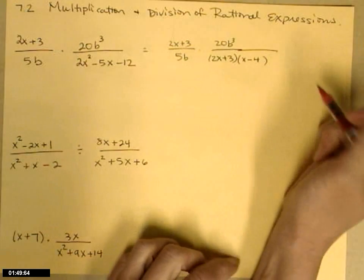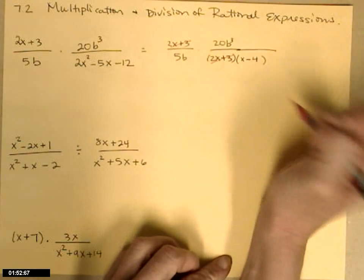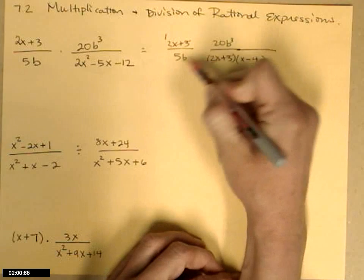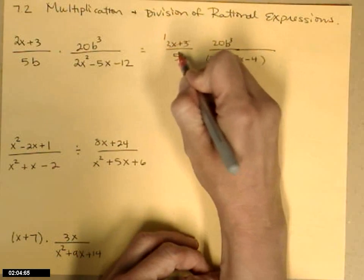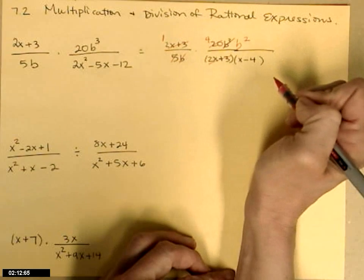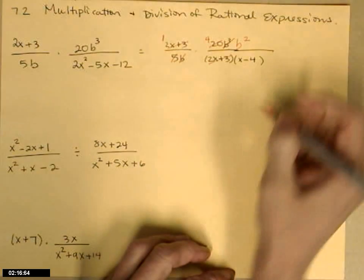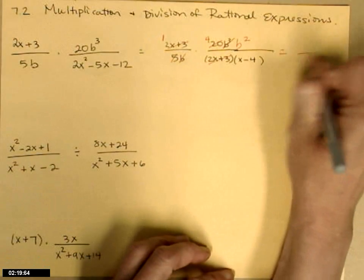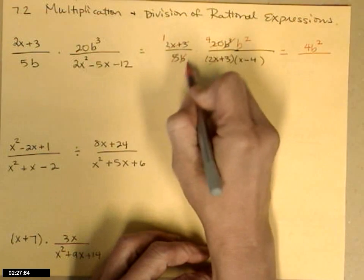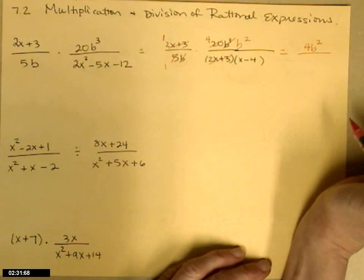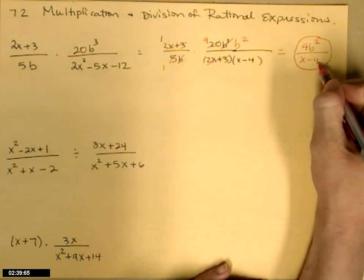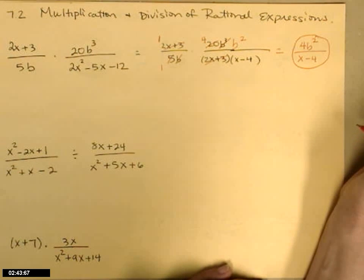Now I have everything factored. I'm going to go through and cancel. The 2x plus 3s are gone — it leaves behind a 1 here, but it has something else to multiply so I'm not going to write it. Then looking across, the 5b and the 20b cubed: 5 goes into 20, leaving behind a 4; b goes into b cubed, leaving behind b squared. So writing everybody that's left behind: 1 times 4 times b squared is 4b squared on top, and 1 times x minus 4 on the bottom. Be careful — even though there's a 4 in the top and the bottom, the 4 in the bottom is a term, not a factor, so we are done.